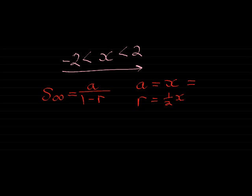But we have a value for x. X is a half. Let's just pause. If x is a half, my constant ratio is a half times x, which is a half times a half, which is a quarter. So I substitute in my values. I get a half divided by 1 minus a quarter.